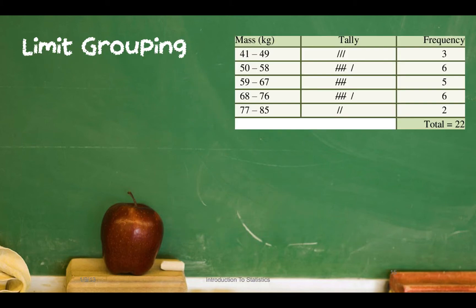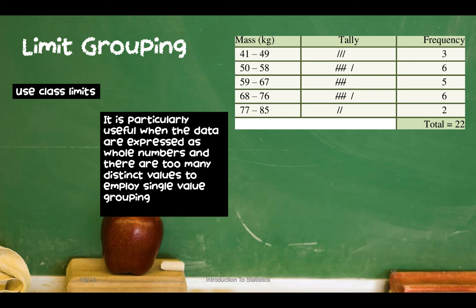Our next grouping method is limit grouping. Limit grouping is used when we have discrete data, and here we use things called class limits to form buckets — for example, 41 to 49, 50 to 58, 59 to 67, and so forth. These are not individual data values but ranges. This method is particularly useful when the data set consists of whole numbers and there is a large range of data values.